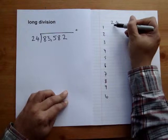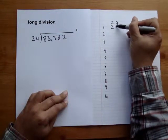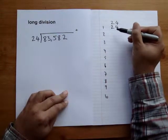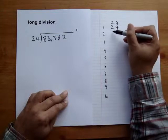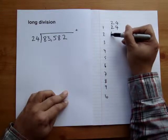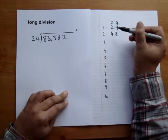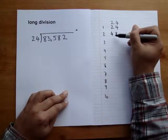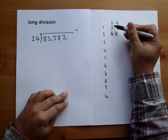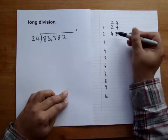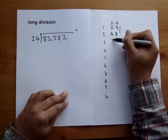Two times 24, just double the 24 and we get 48. Three times 24, add the answers that we got for the 2 and the 3 and we get 72.